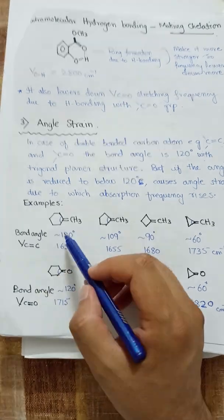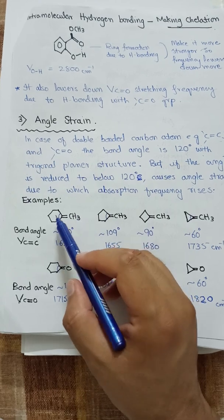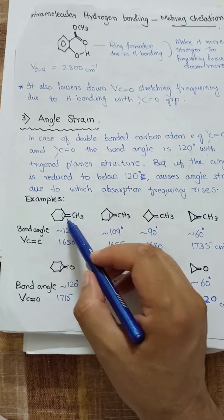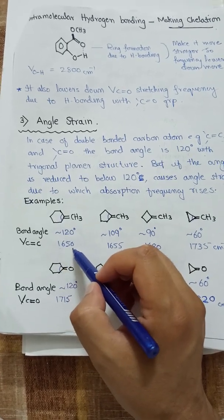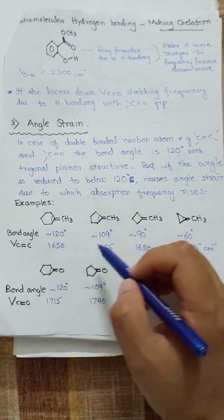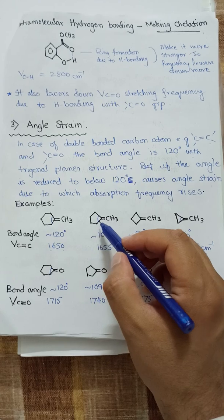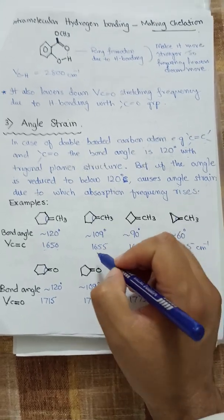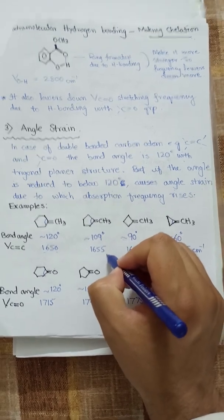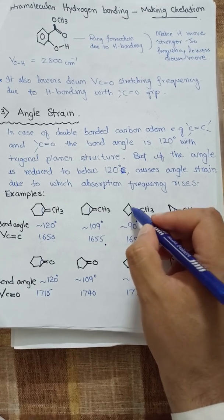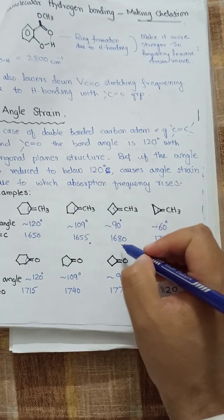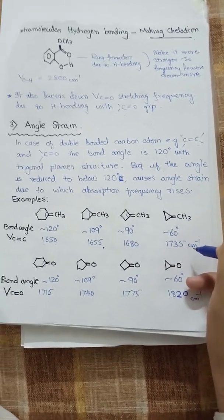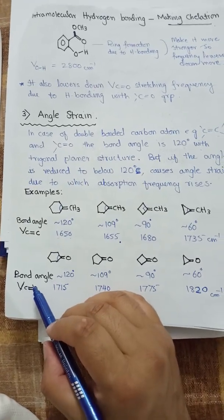As an example, in cyclohexene the C=C double bond has a bond angle of almost 120°, consistent with sp2 hybridization, and gives a C=C stretching at 1650 cm⁻¹. When attached to a pentagonal ring, the bond angle decreases and the frequency becomes 1655 cm⁻¹. When the bond angle decreases further to 90°, the absorption frequency increases more. At 60° bond angle, it reaches 1735 cm⁻¹, showing that absorption frequency increases as the angle strain increases.